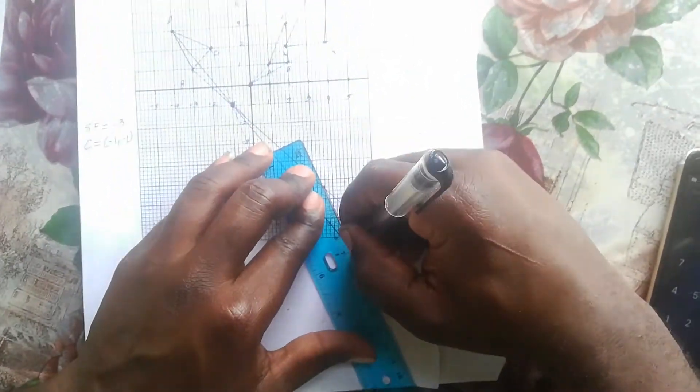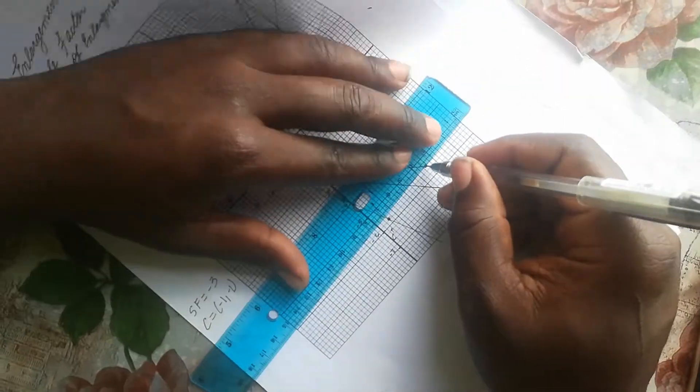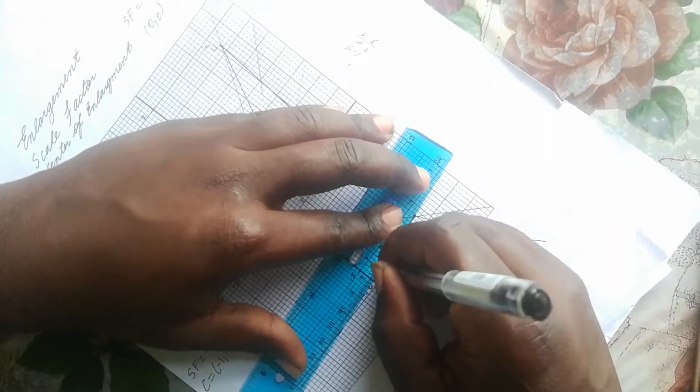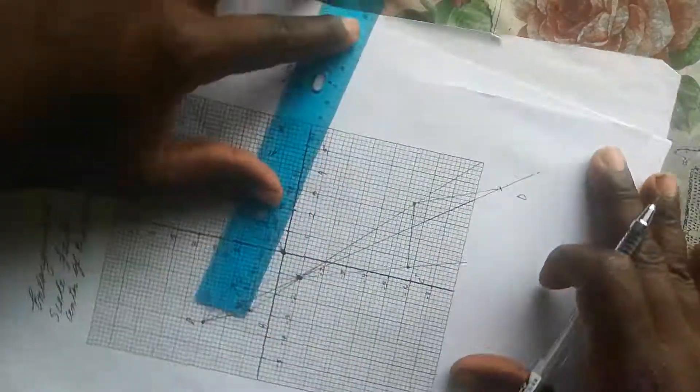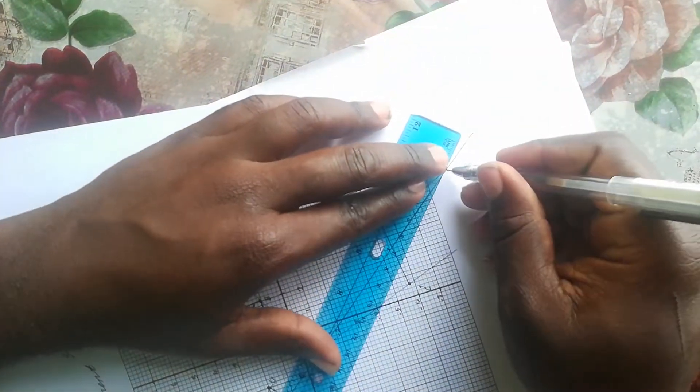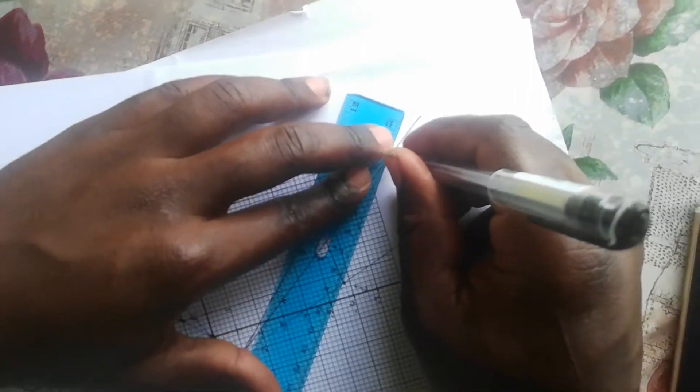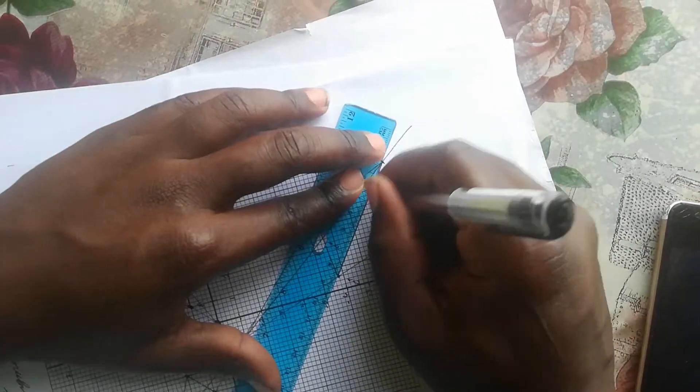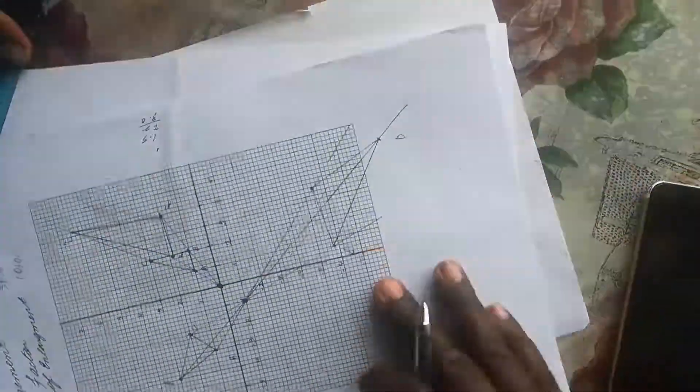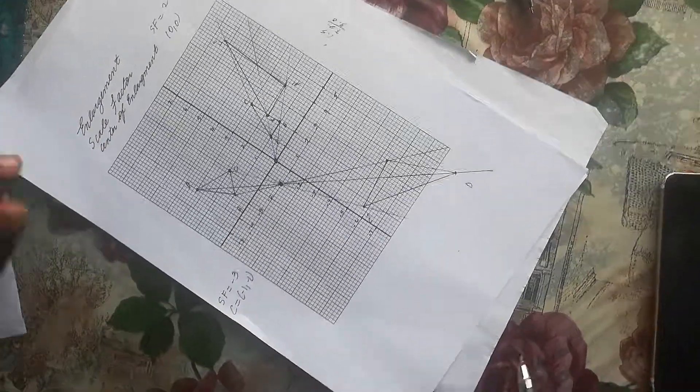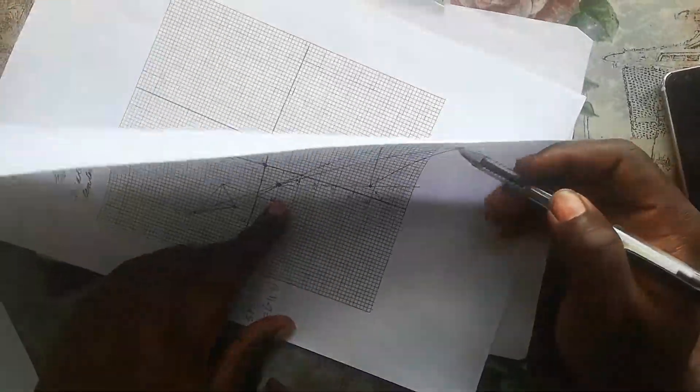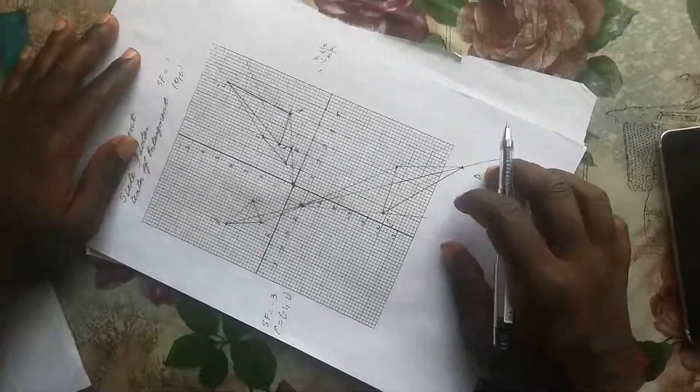When our scale factor is negative, we draw lines from the vertices through the center. If the scale factor is positive, we go from the center through the vertices. There we have it - a negative scale factor, so it was enlarged by 3, but negatively. Stay tuned for more.